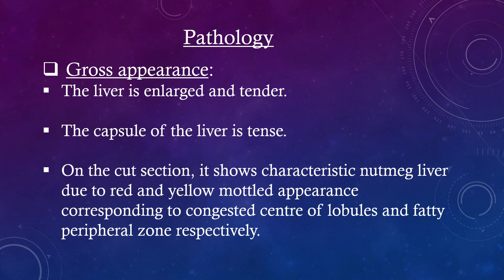Pathology — gross appearance. The liver is enlarged and tender. The capsule of the liver is tense. On the cut section, it shows characteristic nutmeg liver due to a red and yellow mottled appearance, corresponding to congested centers of lobules and fatty peripheral zones respectively.